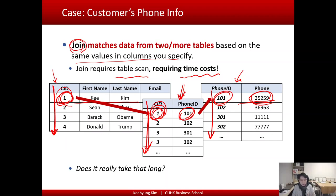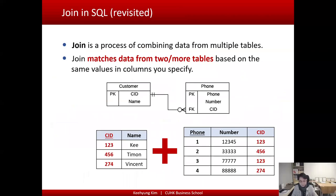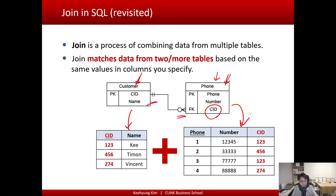Let me give you an example to illustrate the time cost of the join process. To simplify, I'll use a one-to-many relationship: one customer can have many phone numbers, and each phone number belongs to only one customer — so there's a customer ID in the phone number table. The join is a process of combining data from multiple tables. With this design, the customer table looks like this and the phone number table looks like this.